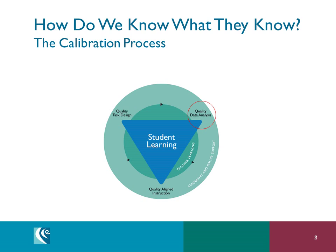This question — how do we know what they know — can be asked as the essential question for all performance assessments. As we analyze student work with the calibration process, we generate rich evidence to decide where a student is in his or her progress towards proficiency. This is the point at which we determine what do they know.